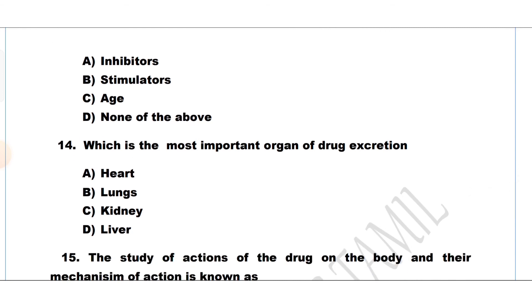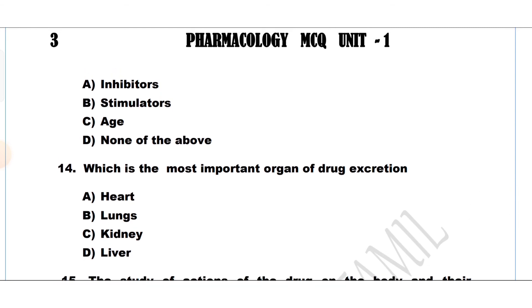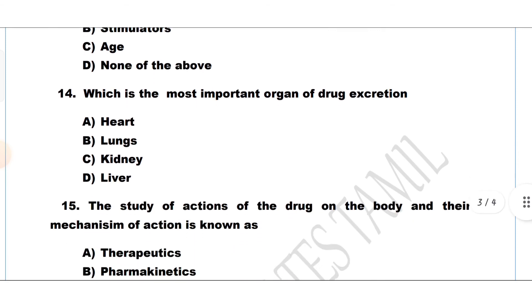Question number 14. Which is the most important organ of drug excretion? Simple question. Option A: Heart, Option B: Lungs, Option C: Kidney, Option D: Liver. Option C is the answer — kidney.